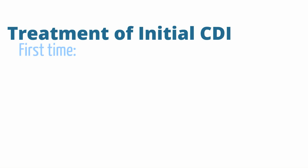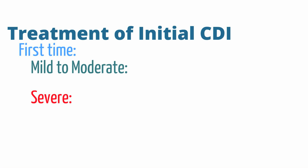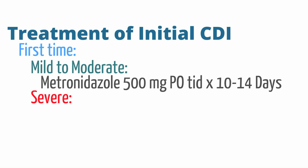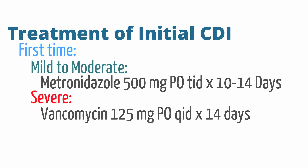Treatment of C. diff largely depends on if someone has a history of C. diff and the severity of their actual infection. For a first occurrence that is mild to moderate, you can treat with metronidazole 500 mg PO TID times 10-14 days. If a patient's first occurrence is severe, then use vancomycin 125 mg PO QID times 14 days, plus IV metronidazole.